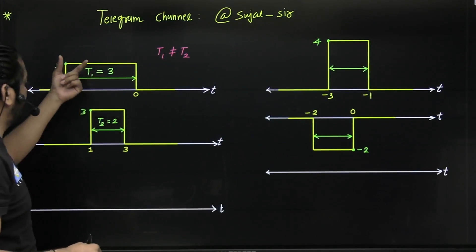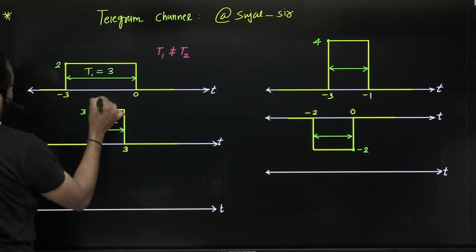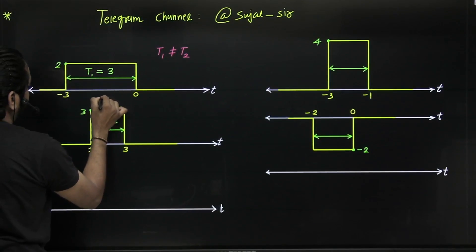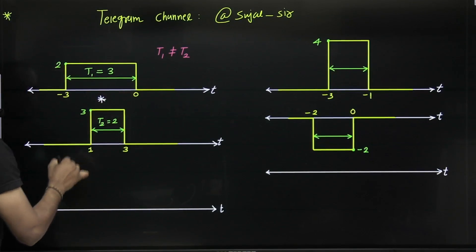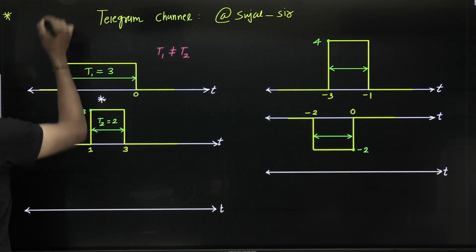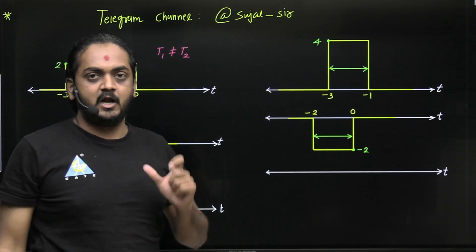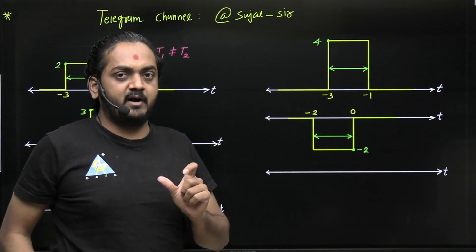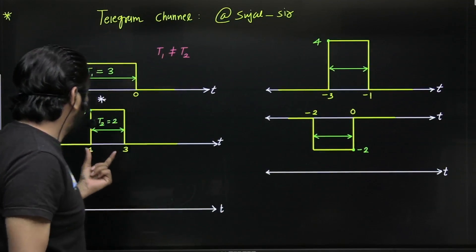If you want to perform convolution of unequal length pulses, then the resultant signal will be trapezoidal. Now, how to identify whether the resultant signal has positive or negative amplitude?